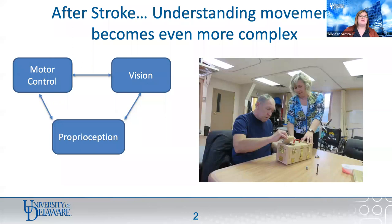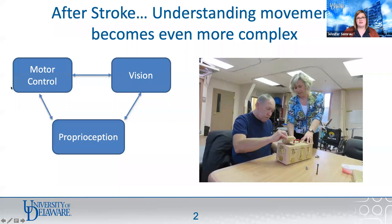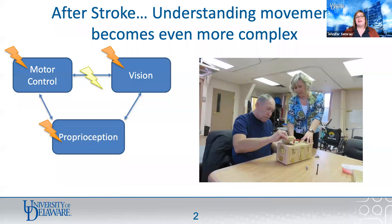When we think about stroke, it's really complex from a sensory-motor standpoint. I think about three interacting boxes: motor control, vision, and proprioception. When you have a stroke, many different things can be impacted — centers controlling motor function, vision, or proprioception may be affected. More complicated still, the connections between each of these different modalities may also be impacted, and we have a really poor understanding of those interactions.